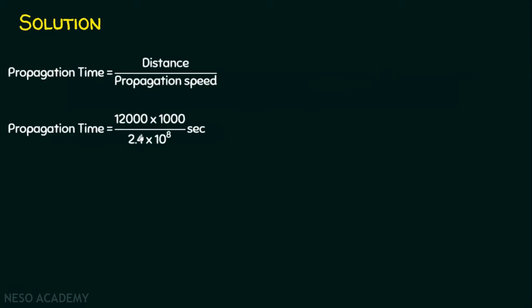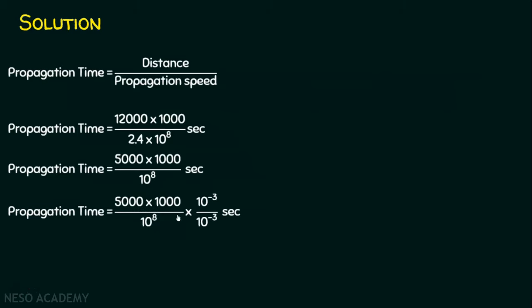So this is 5000 × 1000 divided by 10⁸ seconds. We will convert the answer into milliseconds. The question does not specify milliseconds, microseconds, or nanoseconds — we can represent the answer in seconds — but in this example, let the final answer be in milliseconds, since most delays are represented in milliseconds or microseconds. To convert seconds into milliseconds, the entire value is multiplied by 10⁻³ / 10⁻³, since 10⁻³ / 10⁻³ equals 1. For microseconds we would use 10⁻⁶ / 10⁻⁶, and for nanoseconds 10⁻⁹ / 10⁻⁹.